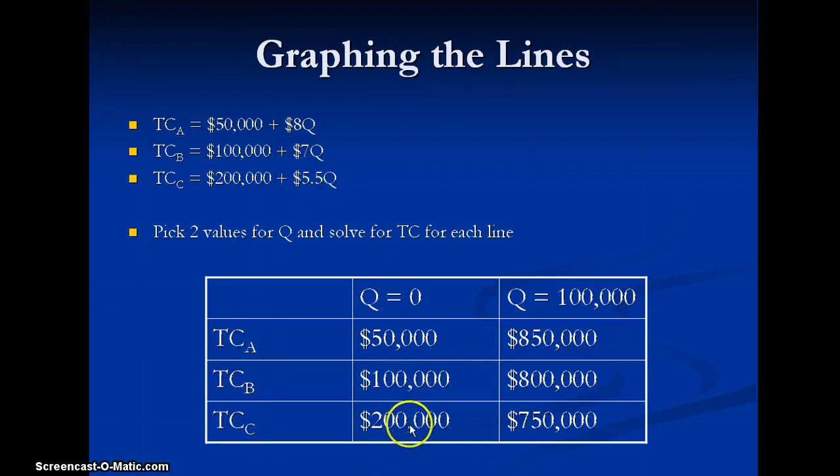The next point I just chose 100,000, it's a nice easy number to compute. So for A I did 50,000 plus 8 times 100,000 which is 850,000 and then I did that same thing for the bottom two equations.